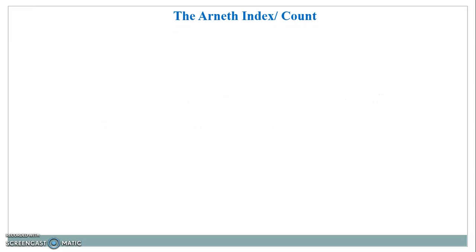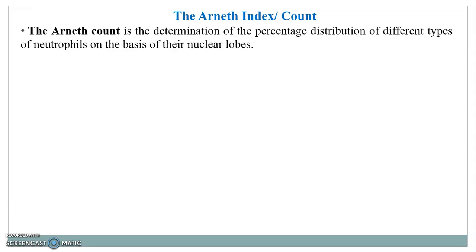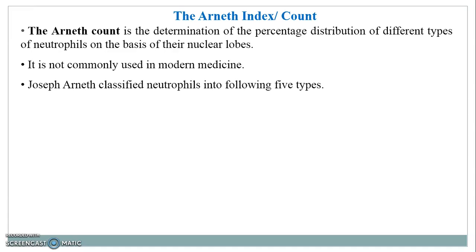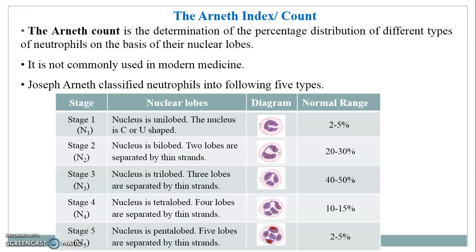The Arneth Count is the determination of the percentage distribution of different types of neutrophils on the basis of their nuclear lobes, though it is not commonly used in modern medicine. Joseph Arneth classified neutrophils into five types. Stage 1 (N1) has a unilobed nucleus in a C-shape or U-shape, with a normal range of around 2–5%.